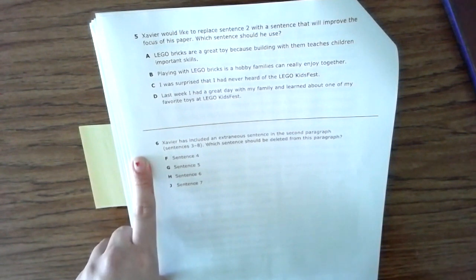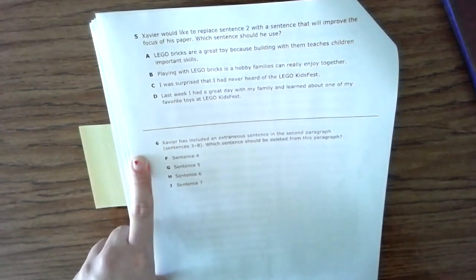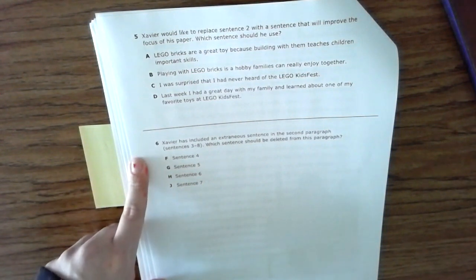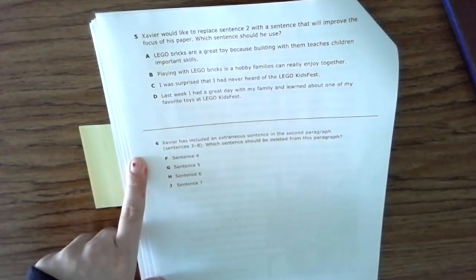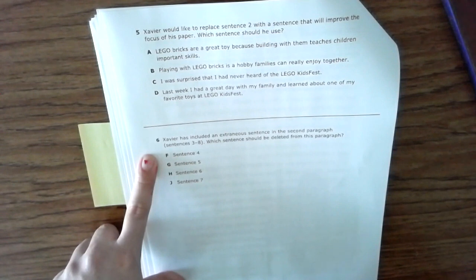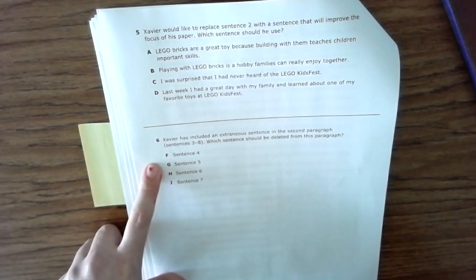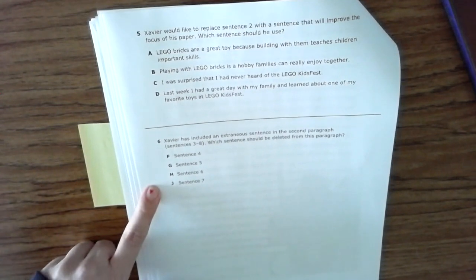Number six: Xavier has an extraneous sentence in the second paragraph, sentences 3 through 8. Which sentence should be deleted from this paragraph? F: sentence 4. G: sentence 5. H: sentence 6. J: sentence 7.